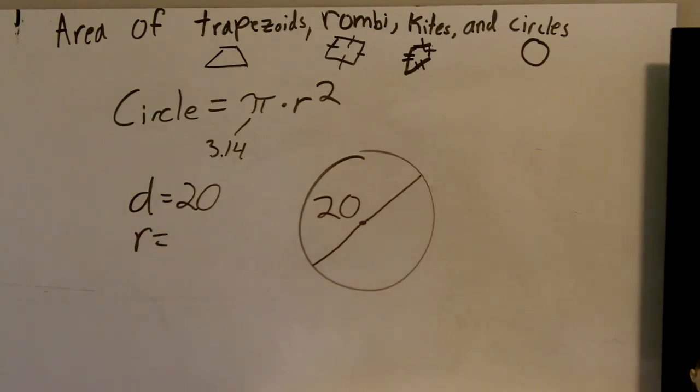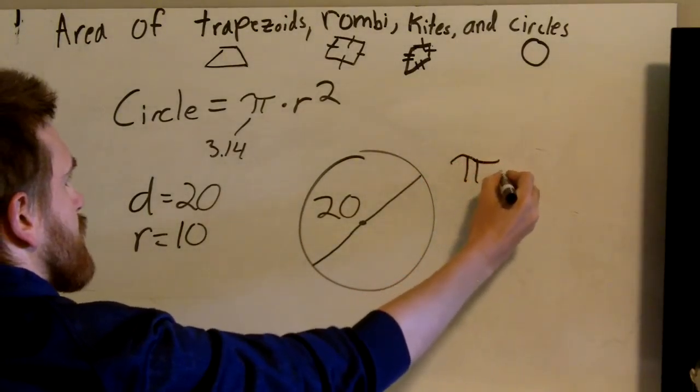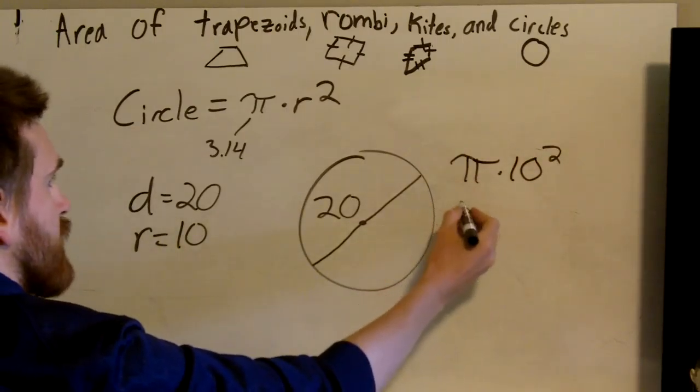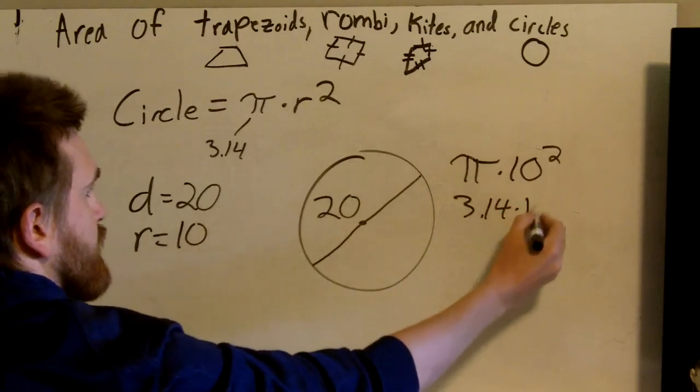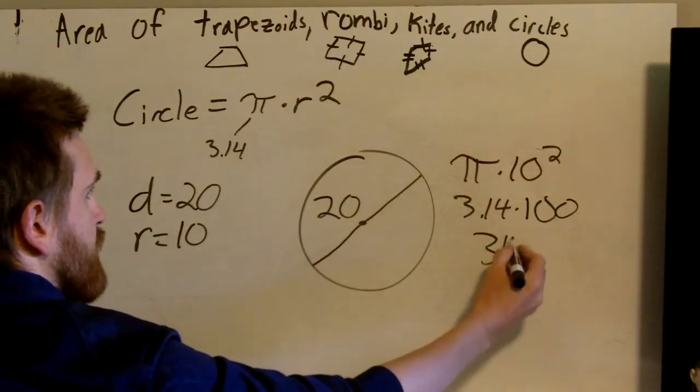Hopefully you remember from last chapter that to get my, or go from diameter to radius, I just divide by 2. So then I have pi times 10 squared. I'm going to use 3.14. So 3.14 times 10 squared is 100. 3.14 times 100 is 314.